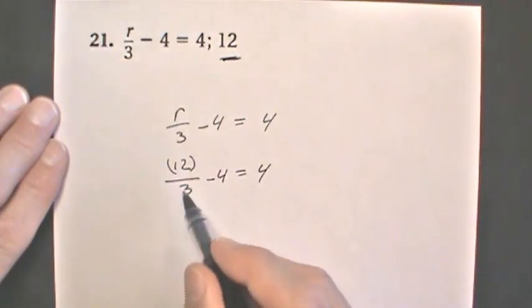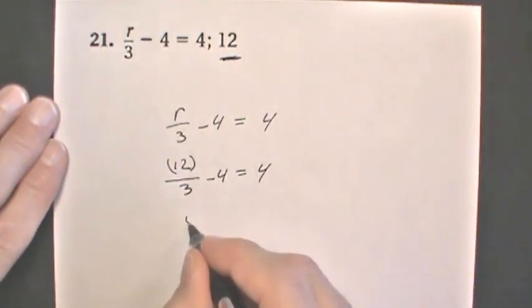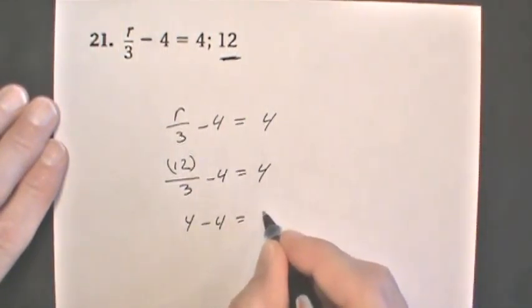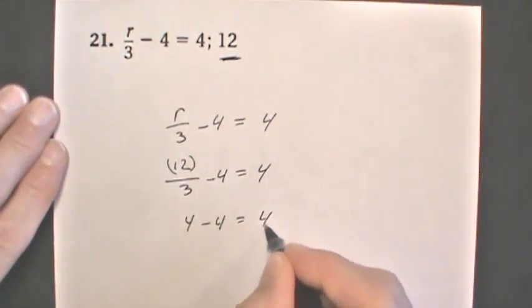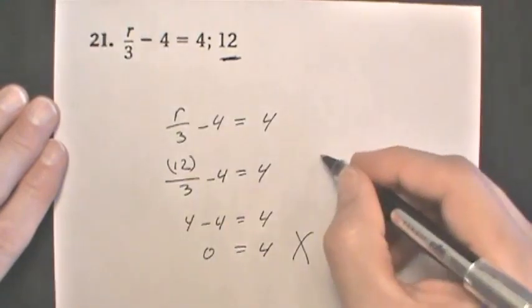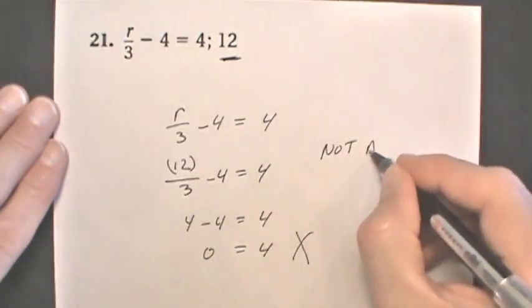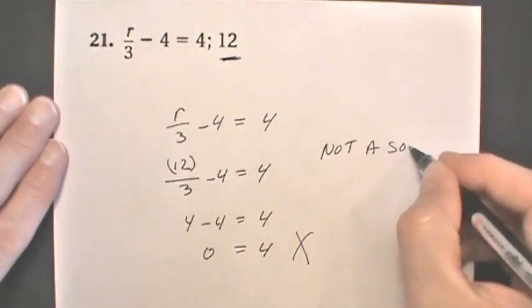We have 12 divided by 3 is 4, minus 4. So 4 minus 4 is 0. Does that equal 4? No. So this is not a solution.